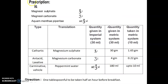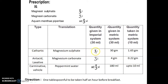The prescription is given in Latin terms. The formulation table shows category/use of ingredient, translation (name of ingredient), quantity given in the imperial system (30 ml), quantity given in the metric system (also 30 ml), and quantity taken in the metric system (10 ml). First ingredient: magnesium sulfate — use is cathartic. Quantity given in imperial is ounce I; one ounce equals 30, so 30 × 1 = 30 grams. Quantity taken is 30 × 0.055 = 1.65 grams.